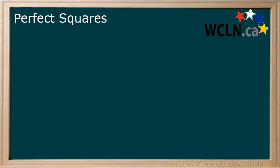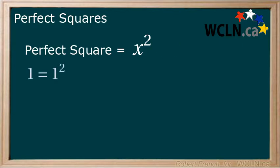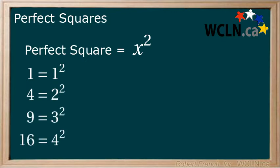Now we know what a positive integer is and that perfect squares are the equivalent of positive integers squared. Remember, saying a number is squared is another way of saying to the power of 2. Let's look at some examples of perfect squares: 1, 4, 9, 16, and now I'm going to add a few more to our list.